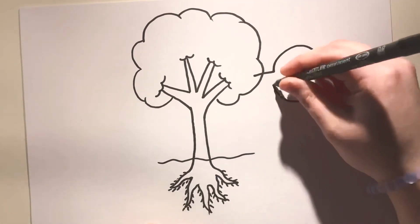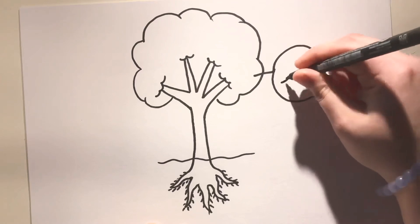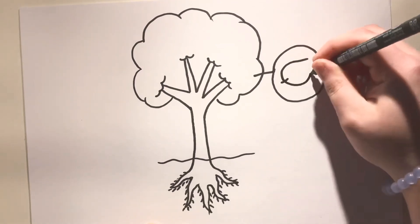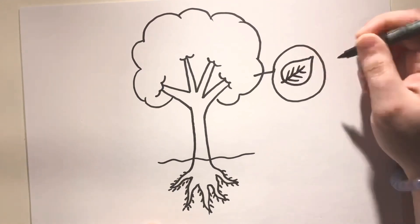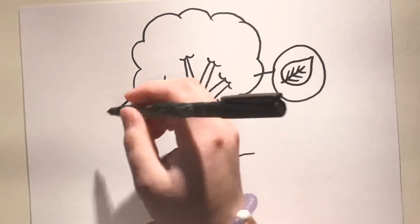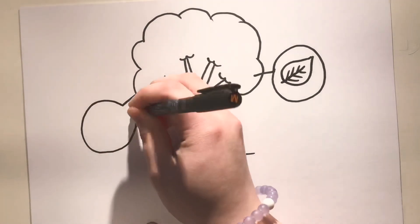The leaves are also very important because they take the water and nutrients that are brought from the roots and they start to make sugar. And that is what the tree needs as its food.